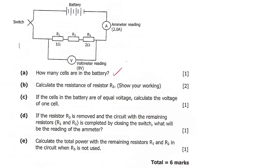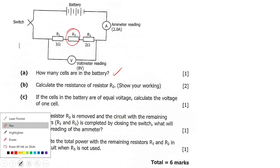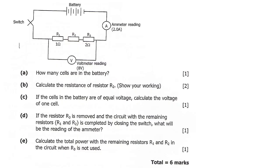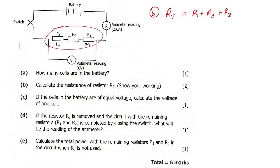Now let's move to question B, which says: calculate the resistance of resistor R2 and show your working. To answer this question, you need to understand that these resistors are connected in series. For series resistors, the total resistance is R_total = R1 + R2 + R3.